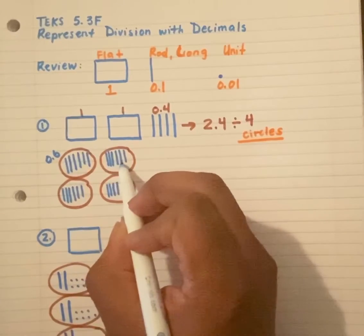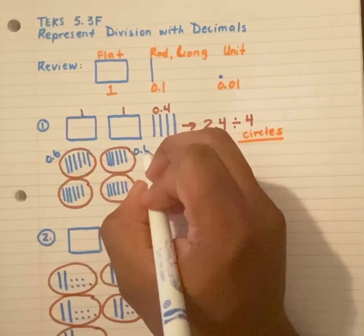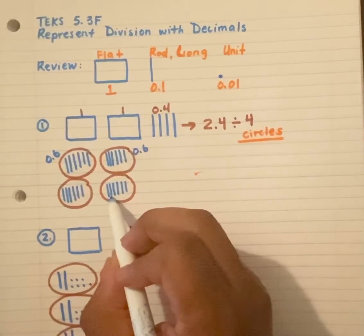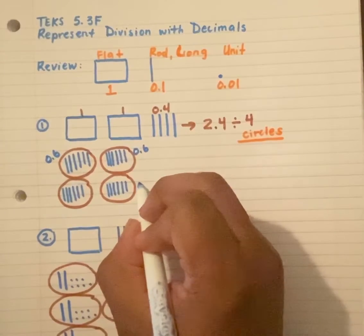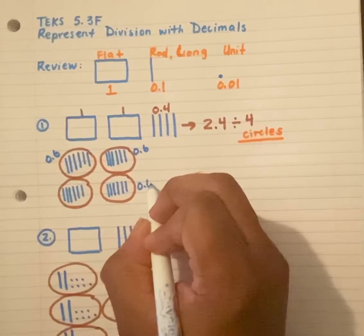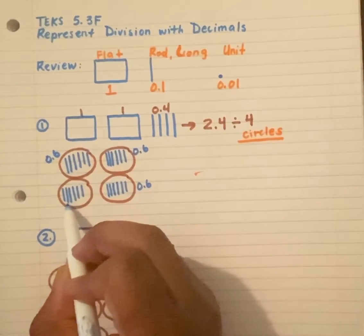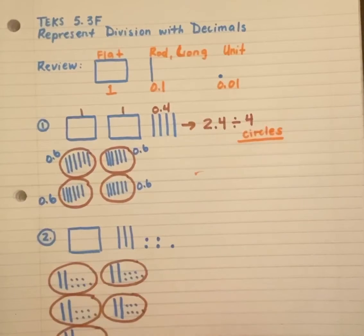One, two, three, four, five, six. This is six tenths or six dimes. One, two, three, four, five, six. Again, we have six tenths or six dimes. And then one, two, three, four, five, six. Six tenths or six dimes.